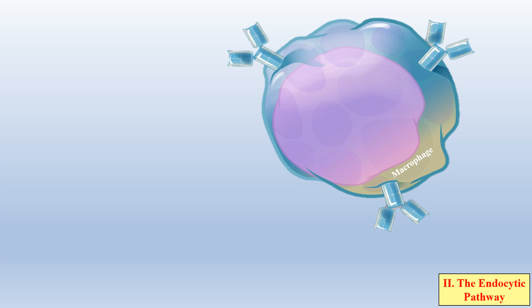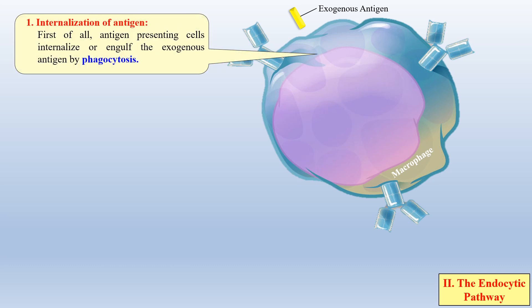The next pathway is the endocytic pathway. In the case of the endocytic pathway, the exogenous antigens — the antigens which are outside the body — enter inside our body and are processed and presented via the endocytic pathway. Here this cell is the macrophage, which is a phagocytic cell. This yellow color shape represents the exogenous antigens coming inside the body from outside. The first step is the internalization of antigen — the exogenous antigen enters inside the body and is engulfed or phagocytosed by the macrophage. As you can clearly see, the exogenous antigen is now inside the macrophage and from here the process of phagocytosis begins.